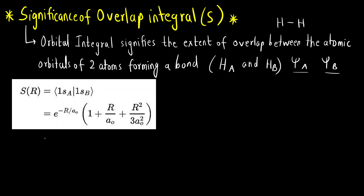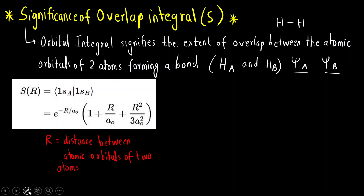In the overlap integral equation, R is the distance between the two atoms — the distance between the atomic orbitals of the two atoms. R ranges from 0 to infinity.